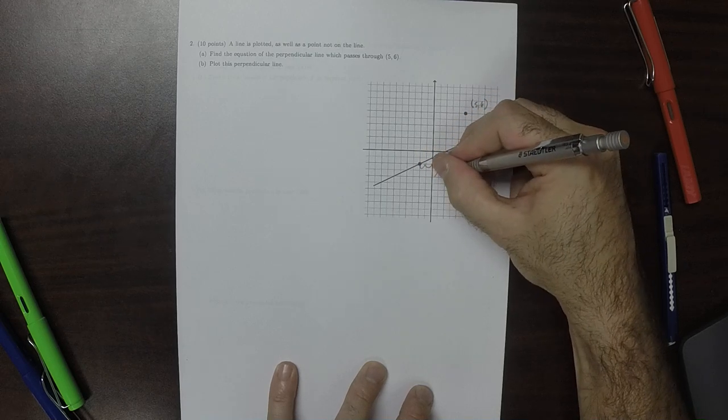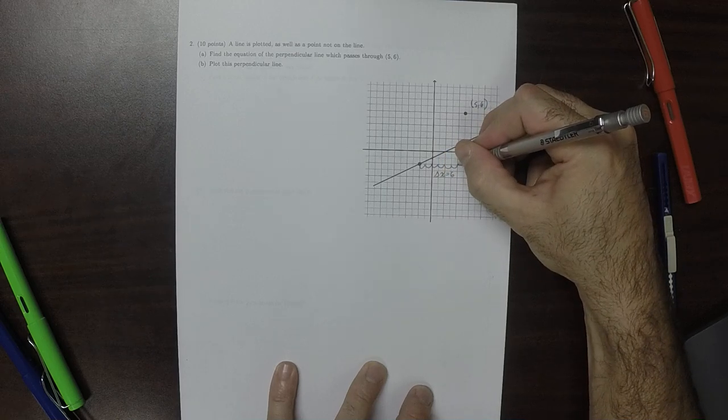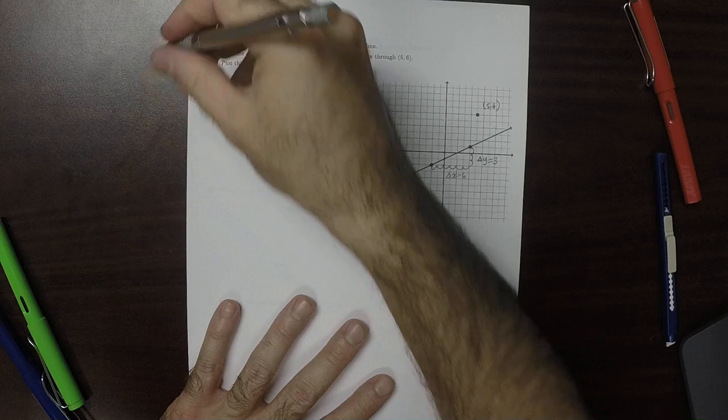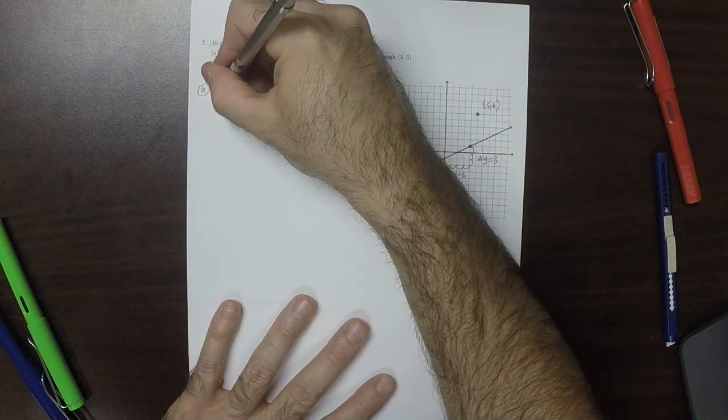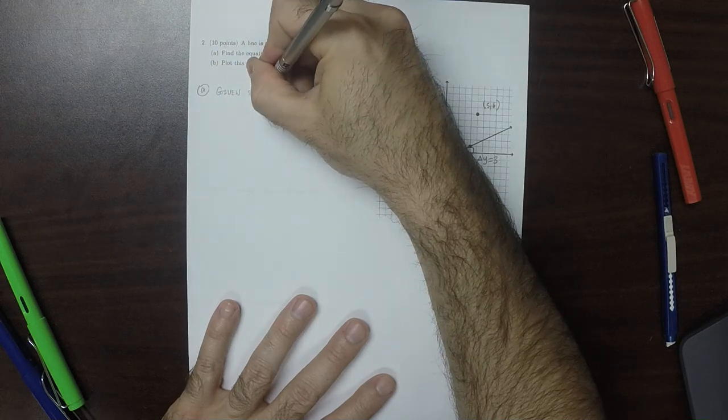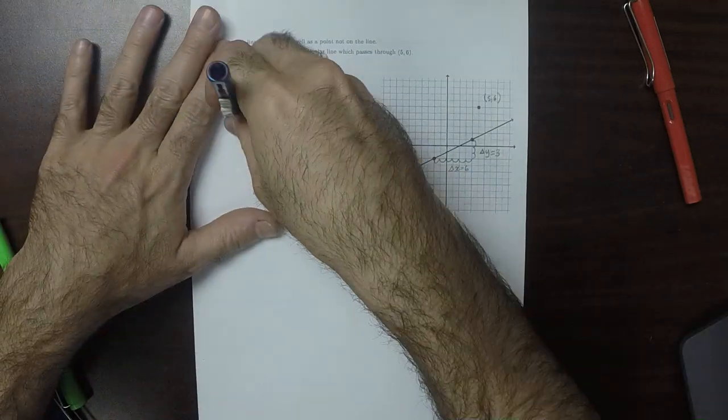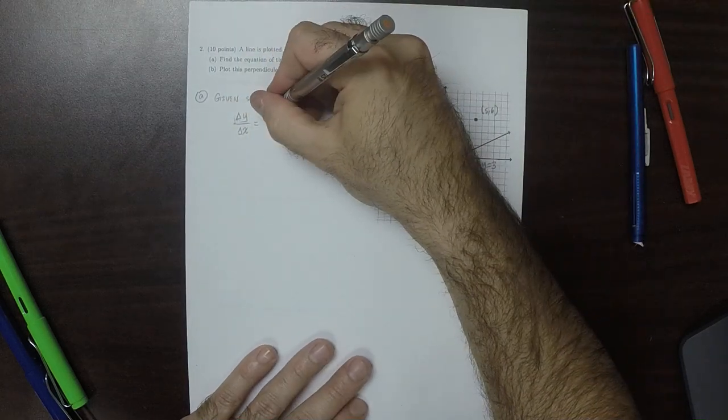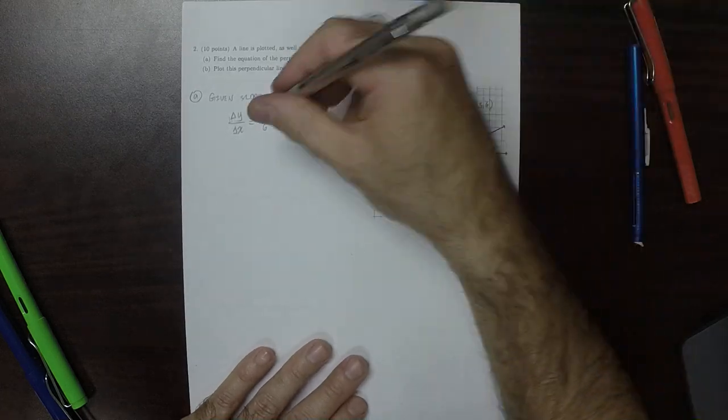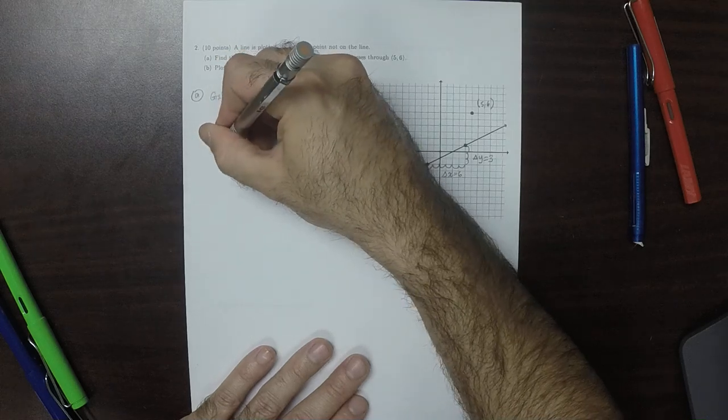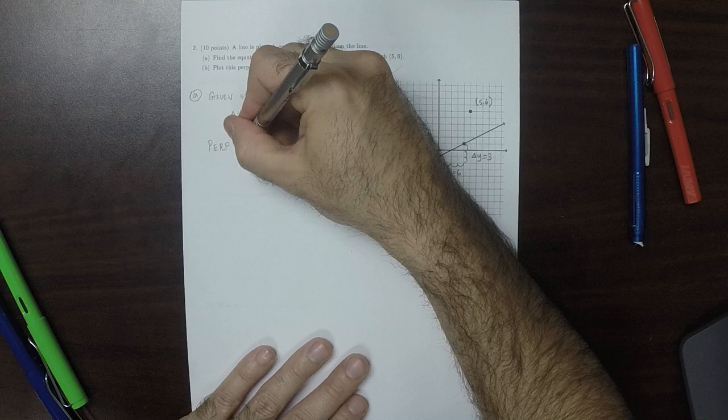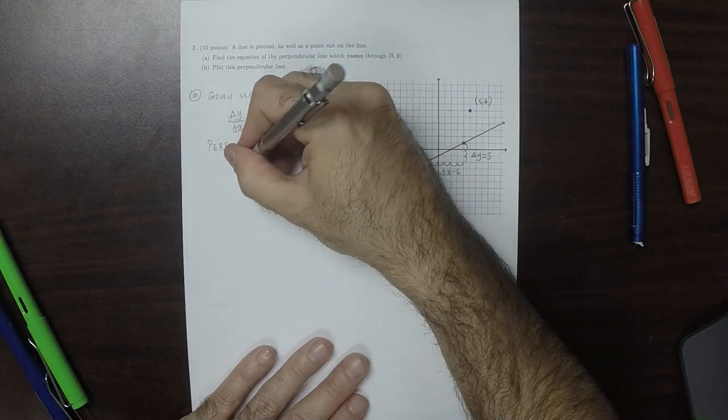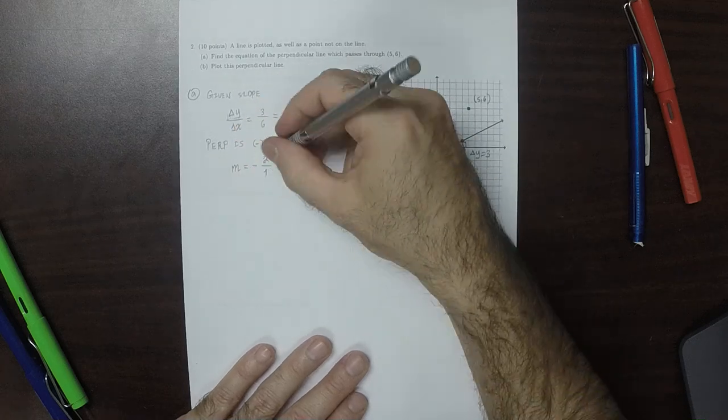So delta x is 6. And delta y is 1, 2, 3. Delta y is 3. So for part a, the given slope is delta y over delta x equal to 3 over 6, which is half. So the perpendicular slope is the negative reciprocal of that. So the slope that we're actually looking for is negative 2 over 1, which is to say negative 2.